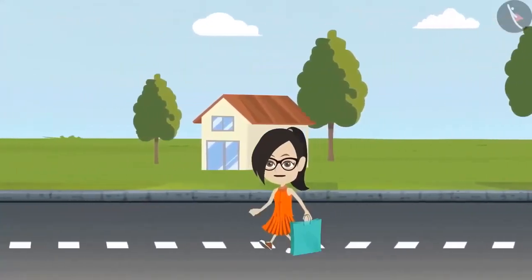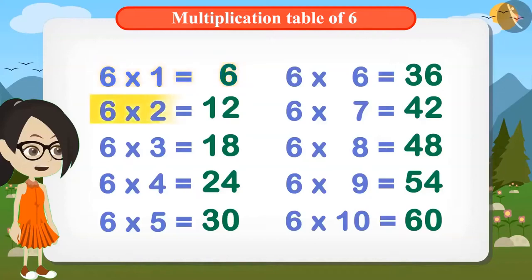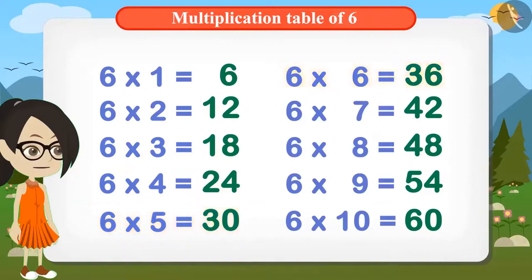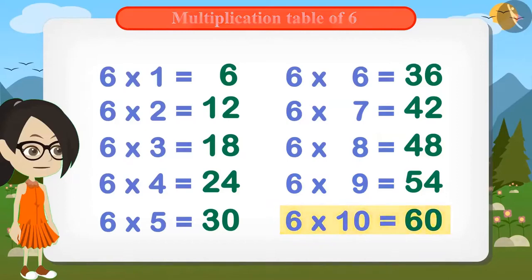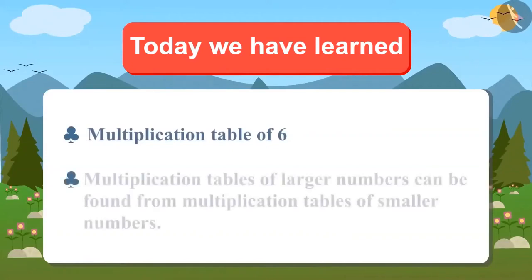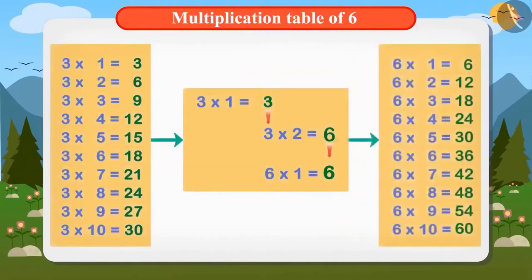Come, let's remember the table of 6 now. Today you learned the multiplication table of 6. And you also learned that multiplication tables of bigger numbers can be found out from multiplication tables of smaller numbers, just like Vandana figured out the multiplication table of 6 from the multiplication table of 3. You can try to find the multiplication table of 6 from the multiplication table of 2.